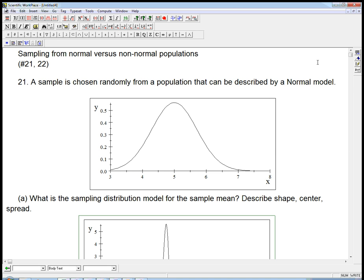Let's look at a couple of problems from chapter 18 about sampling from normal versus non-normal populations. In problem 21, a sample is chosen randomly from a population that can be described by a normal model.